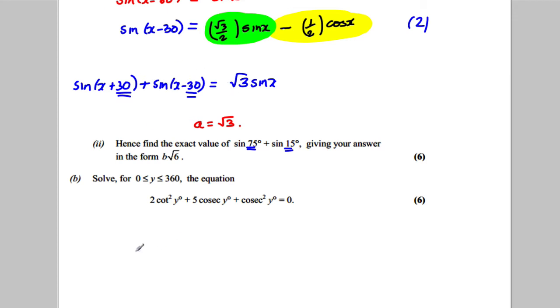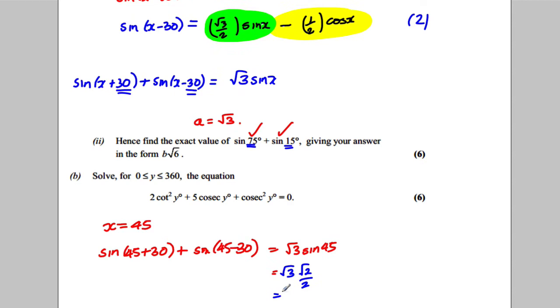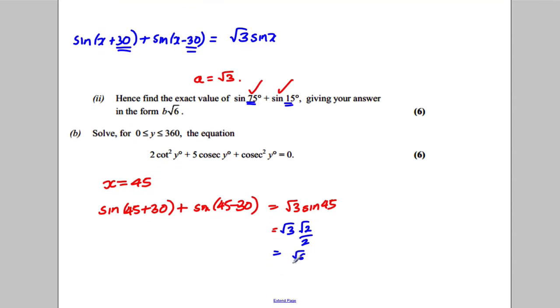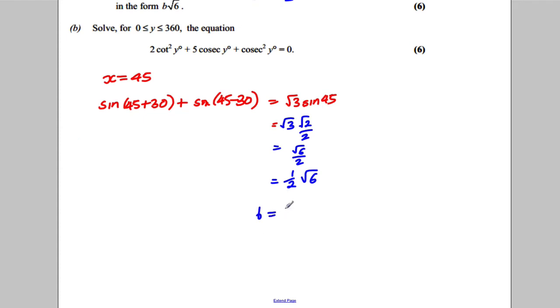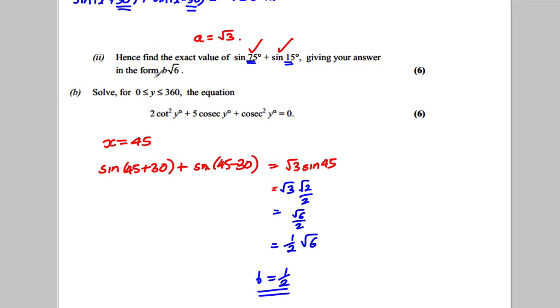If you let x equal 45, using this formula here, you would get sine of 45 plus 30, which is sine of 75, plus sine of 45 subtract 30, which would get you the sine of 15. And you know that would equal root 3 sine of 45. Sine of 45 is root 2 over 2, so this would be root 3 multiplied by root 2 over 2, which would be equal to root 6 over 2, or you could write that as a half root 6. So b is equal to a half in this case.